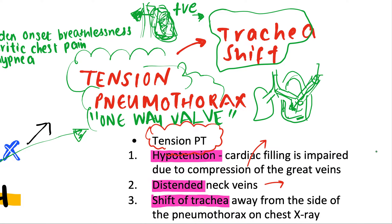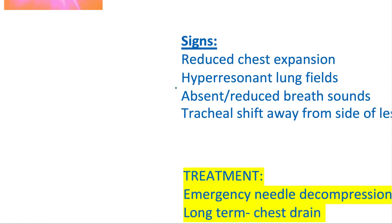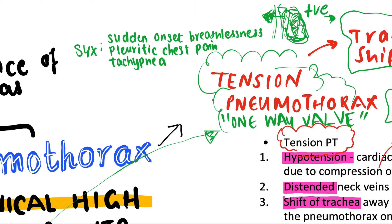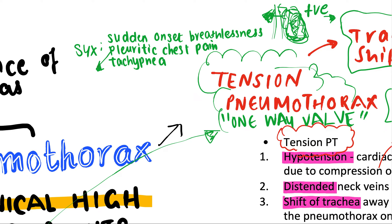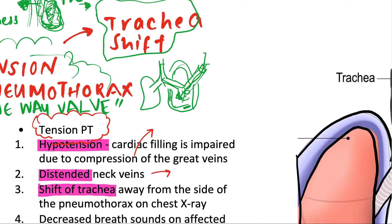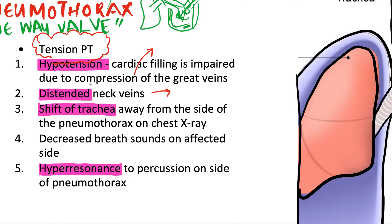There are important signs and symptoms of tension pneumothorax you have to be aware of: sudden onset breathlessness, sudden onset dyspnea, and pleuritic chest pain — which is chest pain on inspiration, so when the patient inspires they feel a lot of pain, and when they exhale it's not as painful — as well as tachypnea. The patient will also be undergoing hypotension, because cardiac filling is impaired: compression of the great veins and the pressure building up pressing on the mediastinum and heart leads to a decrease in preload.